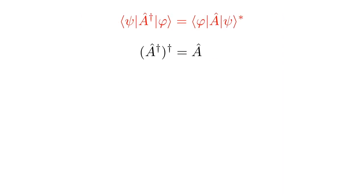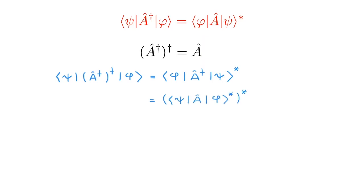For the first one we're going to use the matrix element in red, and the relation tells us that the adjoint of the adjoint of an operator is equal to the original operator. To prove that, we take the matrix element ⟨ψ|(A†)†|φ⟩, then use conjugation to get ⟨φ|A†|ψ⟩*, then use conjugation again — taking the complex conjugate of a number twice gives us the original number — and now we can see that (A†)† equals A, because ψ and φ are arbitrary states. We're done: (A†)† = A.